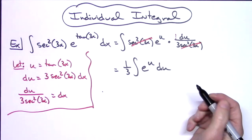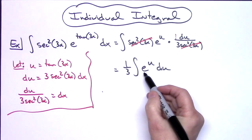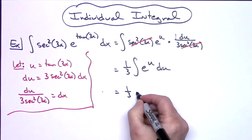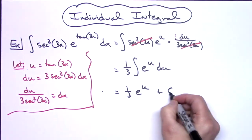At this point it's pretty straightforward. When you integrate e to the u, you get e to the u, so then I'm going to have the 1/3 out in front, I'll have e to the u, and then plus c.